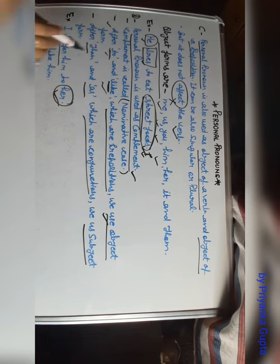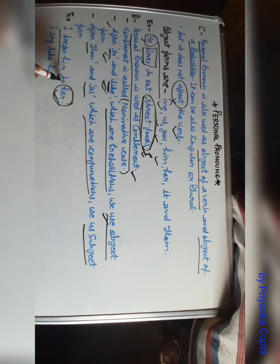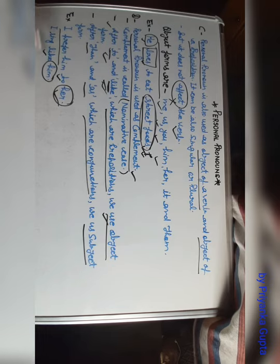I prefer him to her, so this is your object form. Clear? I sing like him. Look here, this is the use of to and this is use of like, so it will be also your object form.